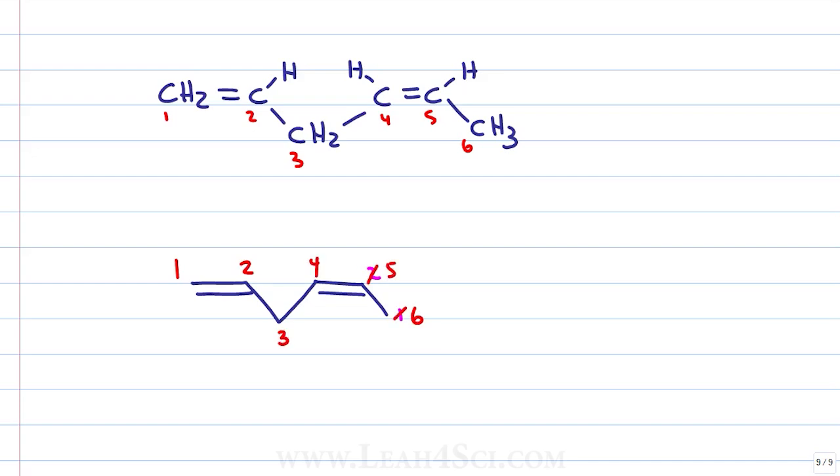I have 6 carbons in my parent chain giving me a first name of hex. I have 2 double bonds which would give me a last name of ene but I have to specify. I have a double bond between carbons 1 and 2 but it starts at 1. I have another double bond between 4 and 5 but it starts at 4 which means I put 1 for the first pi bond comma 4 for the second pi bond dash di to tell me that I have 2 and ene for the pi bonds.